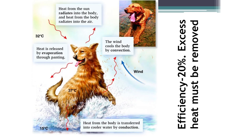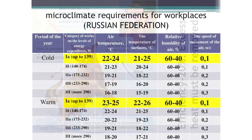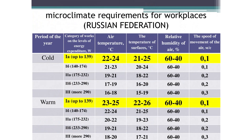Our heat balance depends on the parameters of microclimate: temperature, humidity and air velocity. For comfortable work and prevention of diseases, according to Russian standards, the air temperature at the workplace in the warm season should be from 23 to 25 degrees Celsius, the relative humidity from 40 to 60%, and the speed of air movement about 0.1 meters per second. In the cold season, the air temperature may be slightly less — 22 to 24 degrees Celsius.